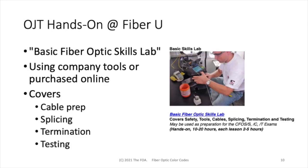Once the employee has finished the basic fiber optics classroom part of the course at FiberU, they move on to the basic fiber optics skills lab. This is where they can read and watch videos about all the different processes used in fiber optics, and then, using the company tools or inexpensive tools and components purchased online, they can practice themselves. The basic skills lab includes cable preparation for splicing and termination, the process of splicing, the process of termination, and all the processes involved in testing.